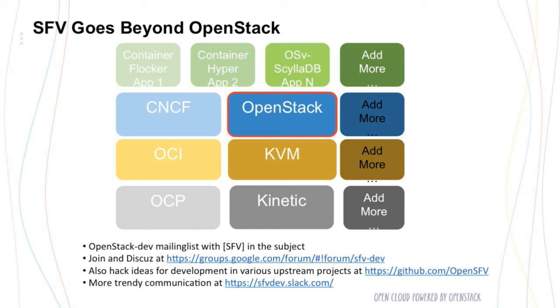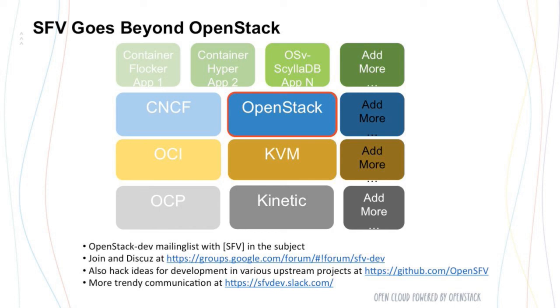There are several ways to connect with us. In the near future, you can search for SFV in the OpenStack dev mailing list and join the discussion. There is a Google group established, and you can also file issues in the GitHub account. Or, more trendily, use Slack — we also have a Slack account. That will be all. Questions are welcome offline. Thank you very much.